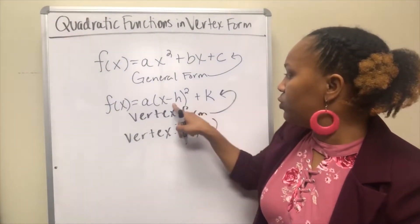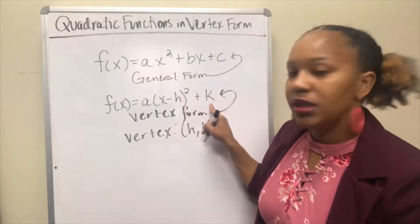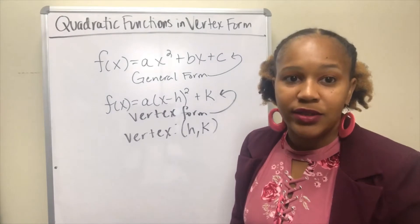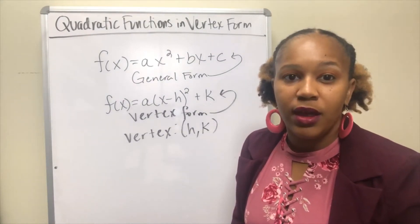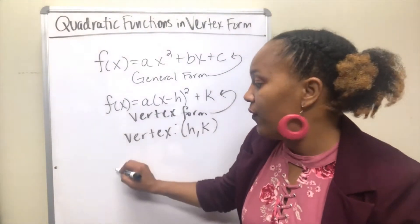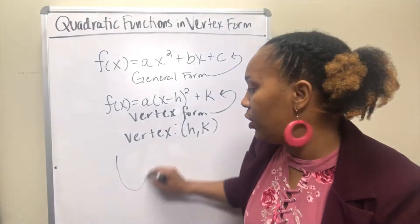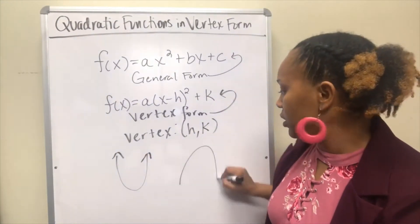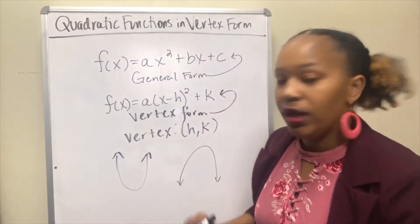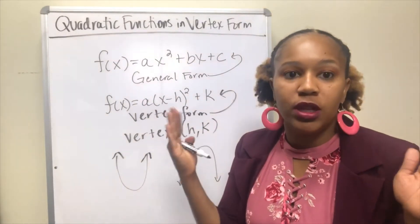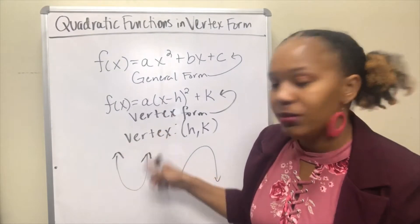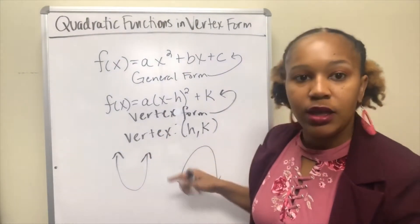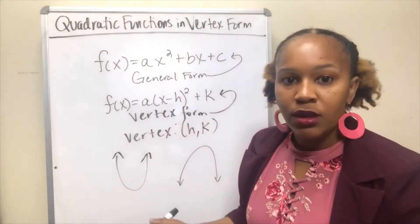H represents the x-coordinate of the vertex and k represents the y-coordinate of the vertex. When you graph a quadratic function, the graph is a parabola that either opens upward or opens downward. The way it opens is the way the arrows are pointing — arrows pointing up means the parabola opens up, arrows pointing down means the parabola opens down.